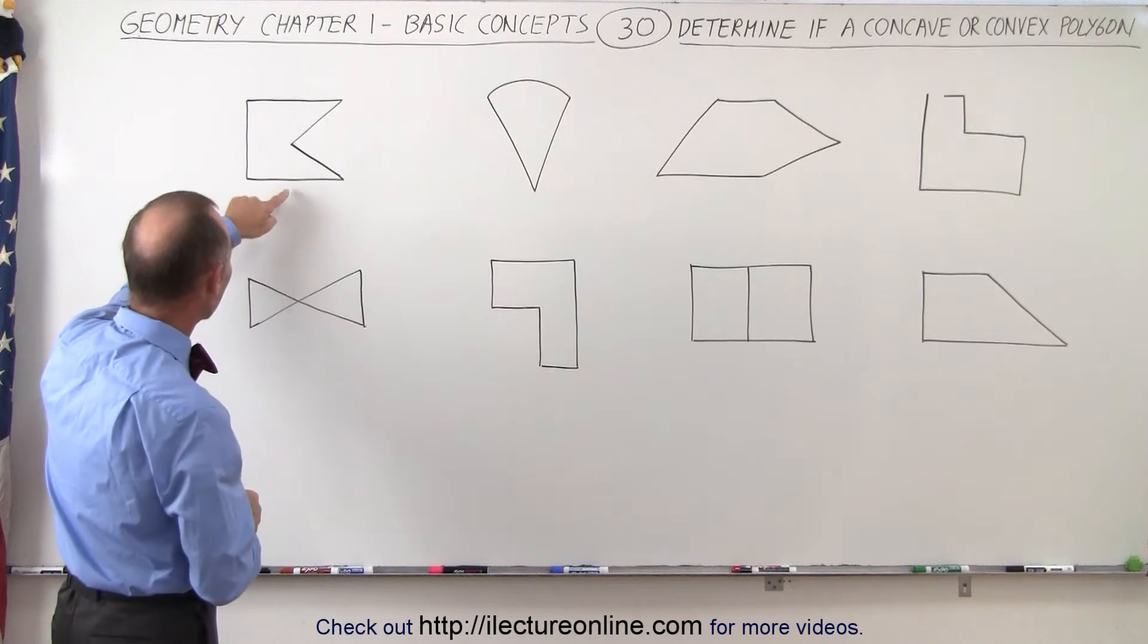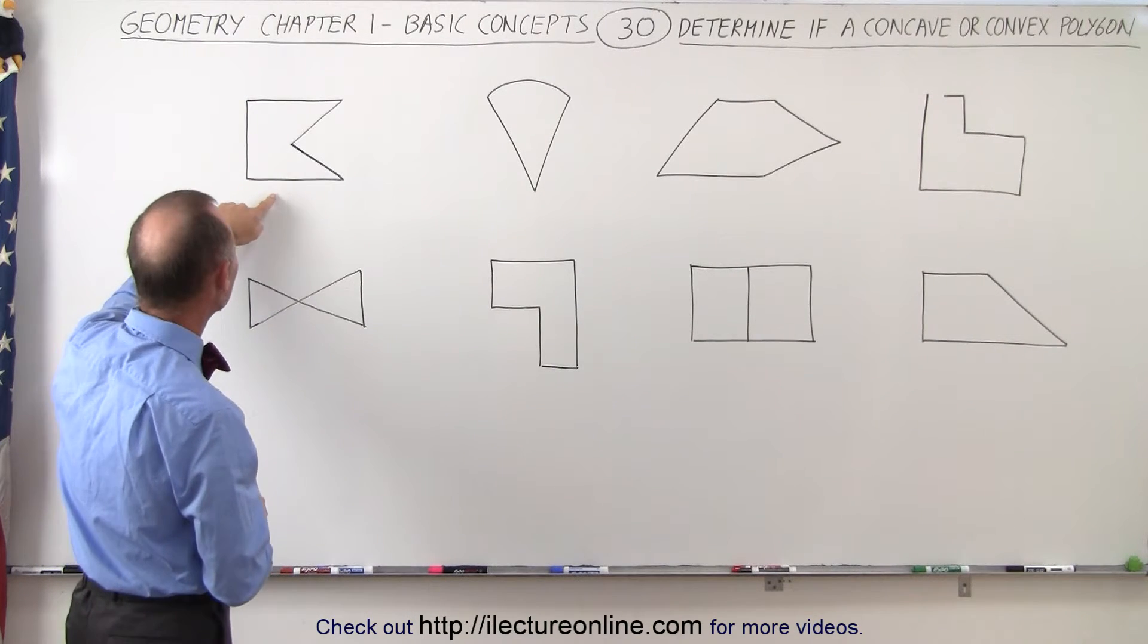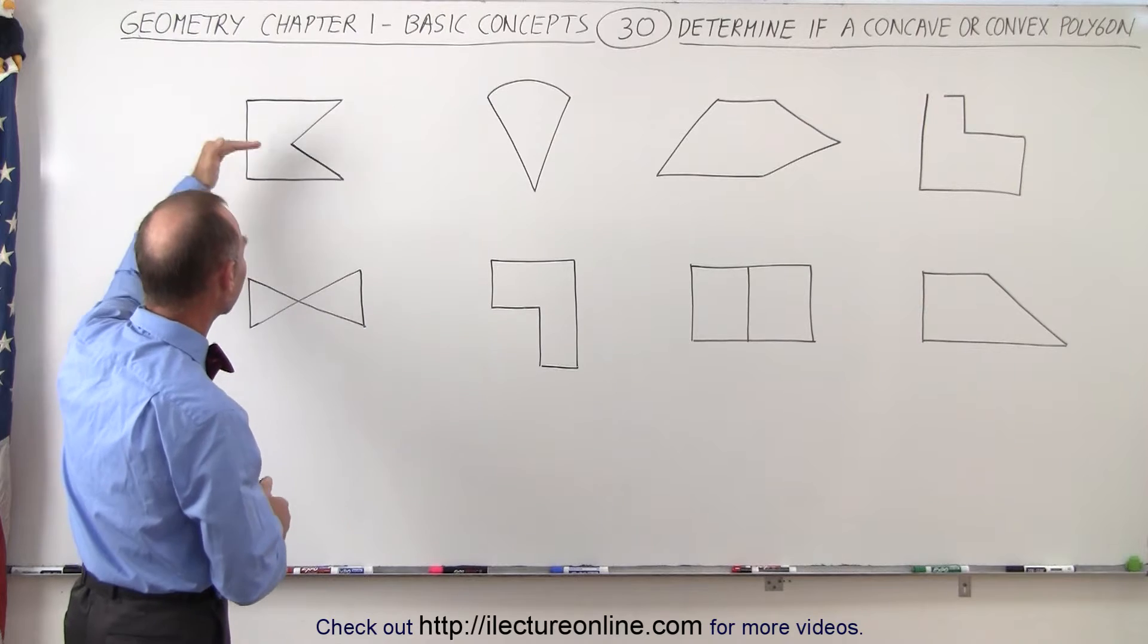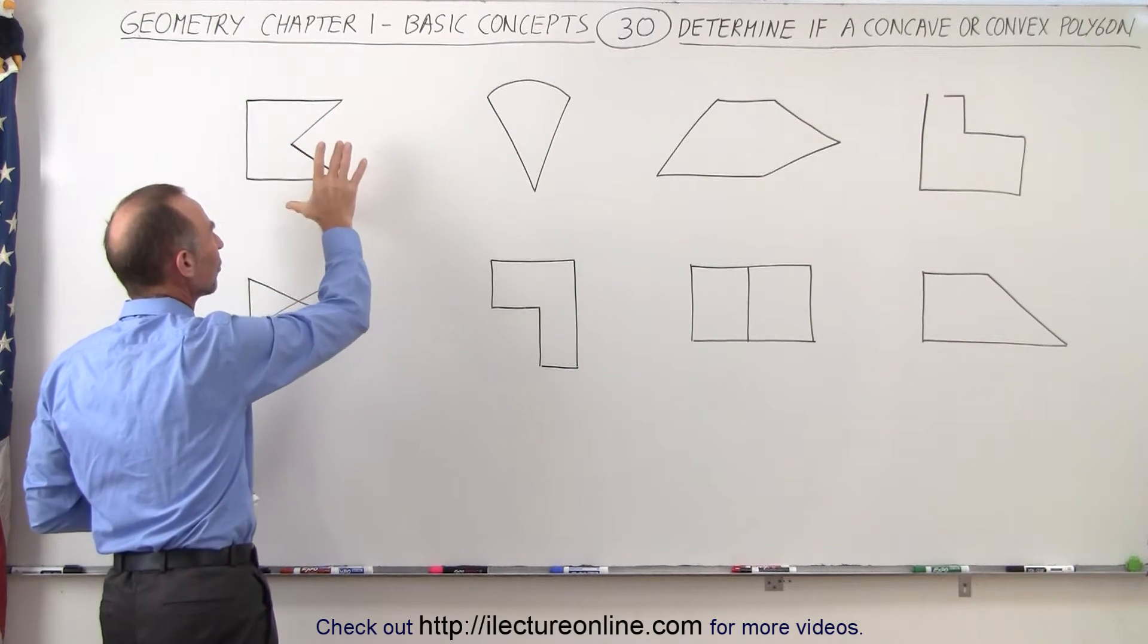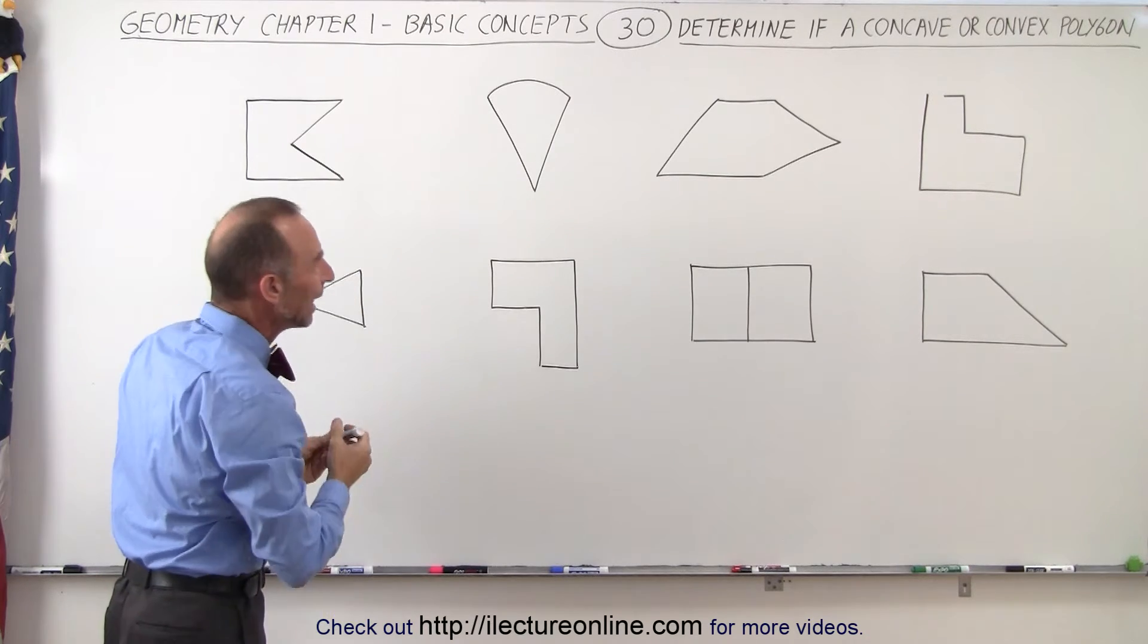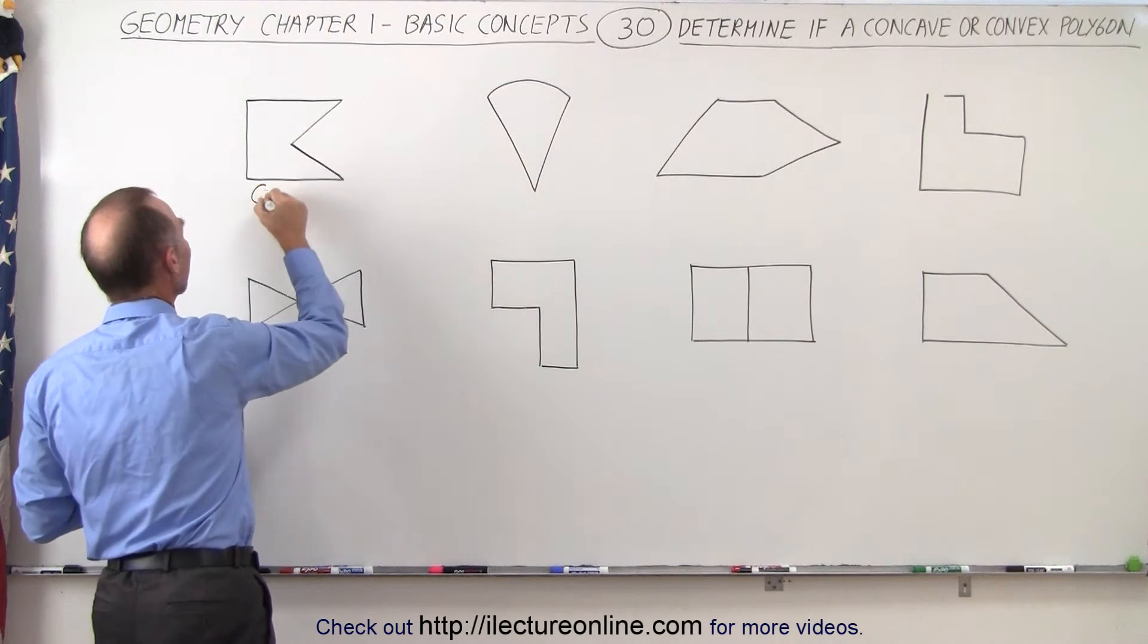Here we take our first figure, and yes indeed there are multiple sides. They're all straight line segments and there's kind of a cave-in right here, so this is indeed a polygon and it's what we would call a concave polygon.